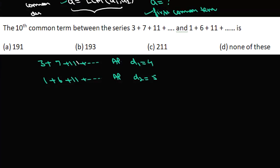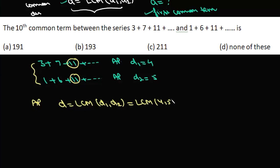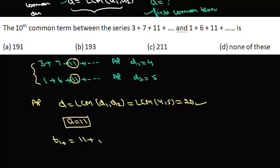The terms common to both series form an AP whose common difference is LCM of D1 and D2, which is LCM of 5 and 4, giving 20. From observation, the first common term is 11. So we need the 10th term of this AP: A plus (N minus 1) times D, which gives 11 plus 180, equal to 191. That's option A.